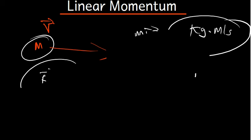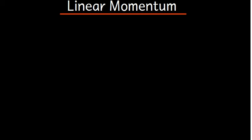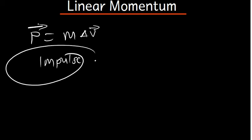Now let's talk more about momentum. When we talk about momentum in general, if an object is moving, it has momentum which is mass times the change in velocity. The change in velocity is the final velocity minus the initial velocity. There is also what we call impulse. There is a relationship between impulse and momentum — impulse is equal to the change in momentum.